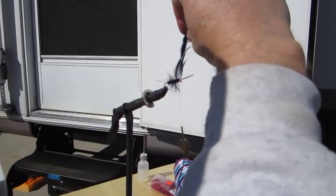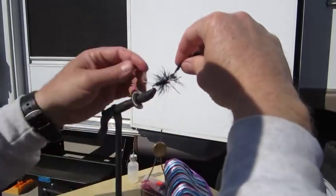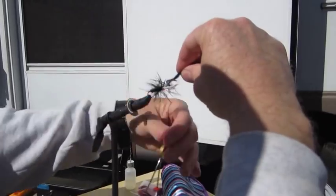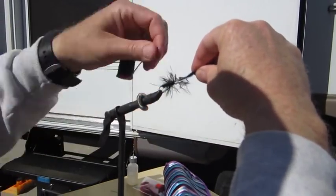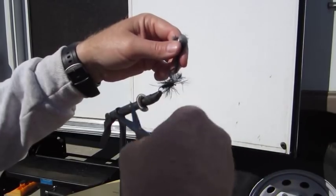Once you get to the front, you may need to wet your fingers and stroke those feathers, pull them back a little bit. We're going to run it in there and throw a couple quick loops around.